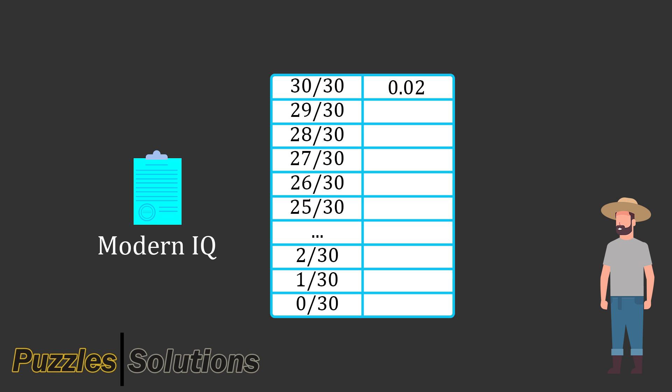Out of the 1000 people, 20 answered 30 out of 30 correct, so 2% of the sample. 30 people scored 29 out of 30, 50 people scored 28 out of 30, and so on. If you score 30 out of 30, you are in the top 2%, meaning that you scored higher than 98% of the population. If you scored 29 out of 30, you would be in the top 5%, scoring higher than 95% of the population.